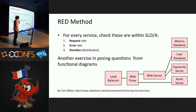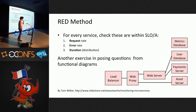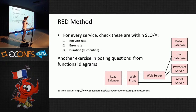Tom Wilkie came up with the RED method, inspired by the USE method. This is for a higher level web service looking at three metrics: request rate, error rate, and duration. Going through components from a modern application environment is a similar useful exercise — draw your functional diagram, identify the three most important metrics, step through each component and see how to measure them. The result of the USE method and RED method is you come up with a dashboard listing those important metrics.